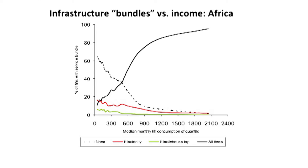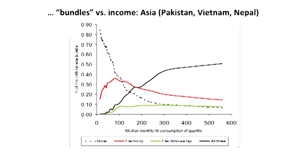The same graph for Africa tells the same story: as income goes up, more and more households have all of these infrastructure services, and households with only one service falls off quite rapidly. For Pakistan, Vietnam, and Nepal, the pattern holds as well — households with no infrastructure services falls off with income, while the full bundle rises quickly until household income reaches about $300 US dollars per month, then levels off dramatically.